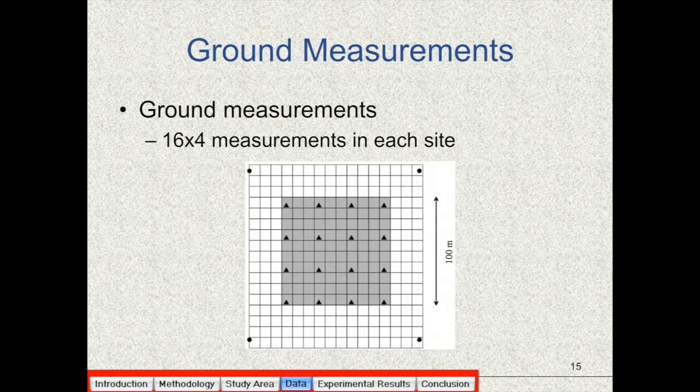Ground measurements for each site were done in a grid of four by four measurement points, and for each point we had four measurements. So we had 64 measurements for each site. This picture shows Radarsat-2 pixels grid on the grid of ground measurements. So we calculated beta and C parameters from the strain model for each site.